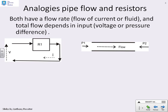Analogies then. What's the analogy between pipe flow and resistors? Well, you'll see that both talk about a flow rate. When we have an electrical resistor, we've got a flow of current. With this pipe, we've got a flow of fluid. In both cases, the total flow depends on an input, which could be a voltage for the electrical circuit or pressure difference for the pipe flow.